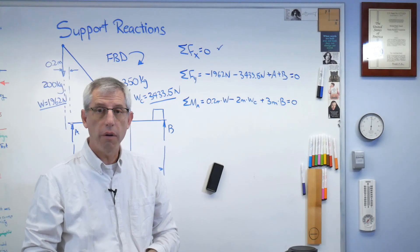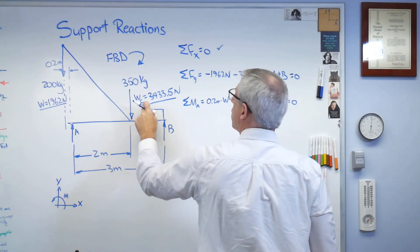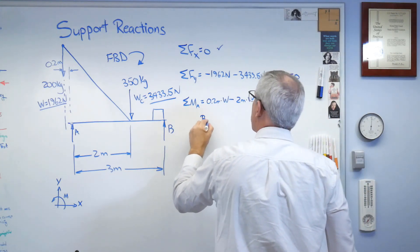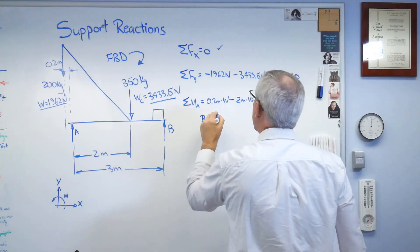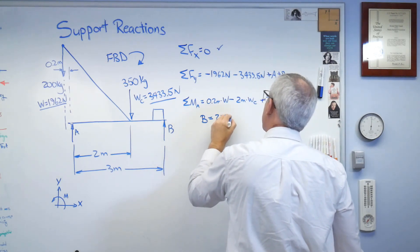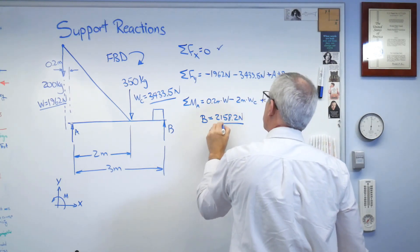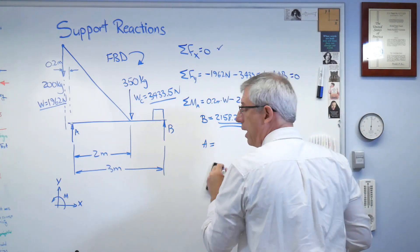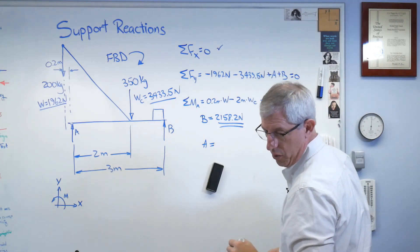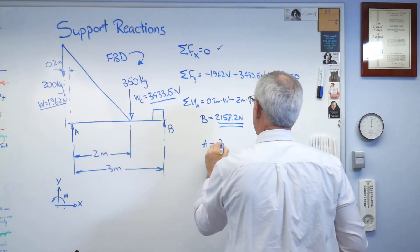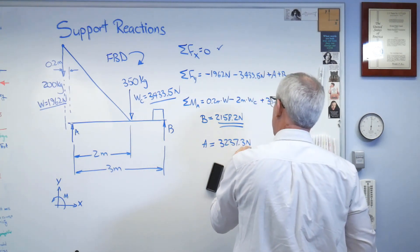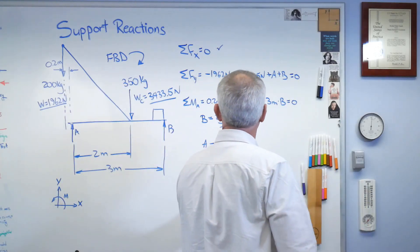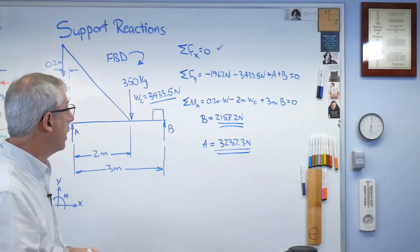So if you solve this, plug that in for WC and plug 1962 in for W, you get B equals, let me make sure I get this right, 2158.2 Newtons. Well, plug that into here, and you're going to get A equals 3237.3. And those are, I think I'll double underline it here, those are the support reactions.